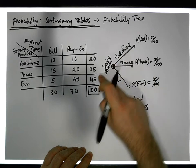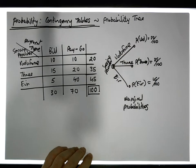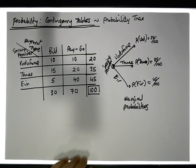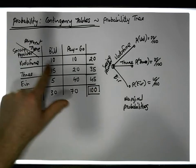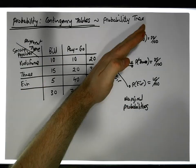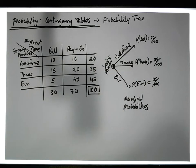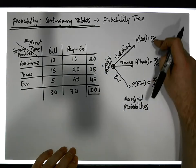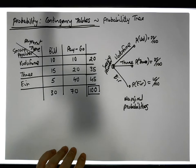The root of this tree is service provider, and we've branched off on the categories associated with service provider. We could have started with payment type as the root, which would have given us two branches — bill pay or pay as you go — but we've started with service provider. So these first-level branches represent the simple marginal probabilities.